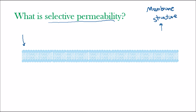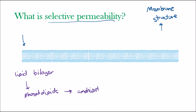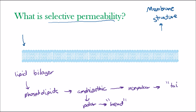So just as a review, we remember that the membrane is actually a lipid bilayer. The lipid bilayer consists of phospholipids. And the phospholipids are amphipathic, which means that they have a polar end — typically referred to as the head of the phospholipid — and then it also has a non-polar region, referred to as the tail or the chain of a phospholipid.